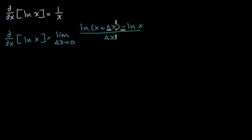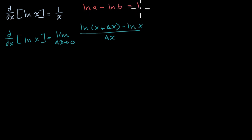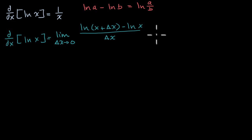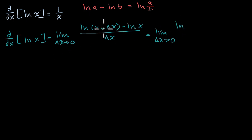So now we can use a few logarithm properties. We know that if I have the natural log of a minus the natural log of b, this is equal to the natural log of a over b. So we can use that right over here. We have the natural log of something minus the natural log of something else, so all of this is going to be equal to the limit as delta x approaches zero of the natural log of x plus delta x over x.